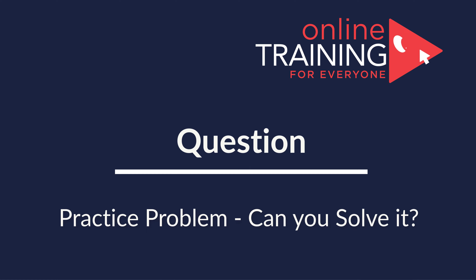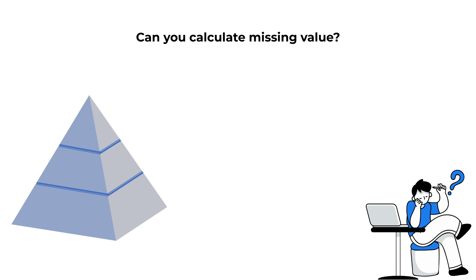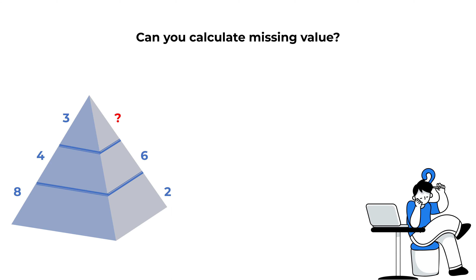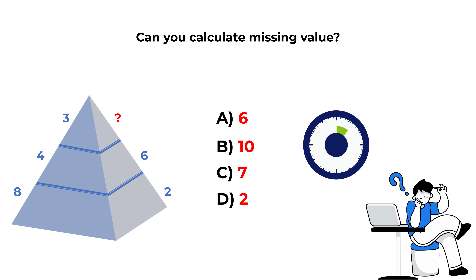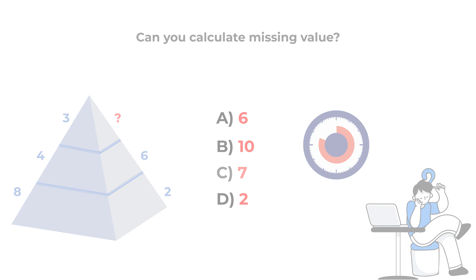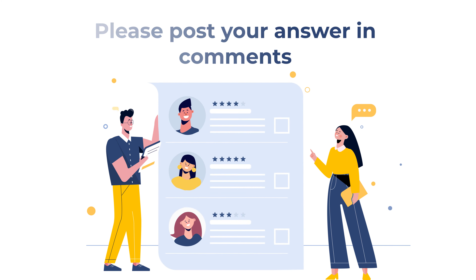Here's a practice problem: you're presented with a triangle broken into three equal horizontal parts. On the left side you see numbers 8, 4, and 3 (bottom to top), and on the right side numbers 2, 6, and one missing number. Choose from: A) 6, B) 10, C) 7, D) 2. Post your answer in the comments so I can give you feedback.